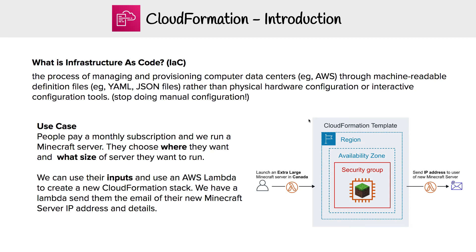To understand CloudFormation, we need to understand infrastructure as code, because that is what CloudFormation is. Infrastructure as code is the process of managing and provisioning computer data centers — in our case, AWS — through machine-readable definition files. In this case, it's CloudFormation template YAML or JSON files, rather than physical hardware configuration or interactive configuration tools. The idea is to stop doing things manually; instead of configuring resources in the console, we use a scripting language to automate that process.